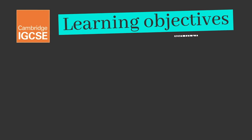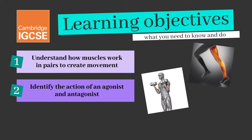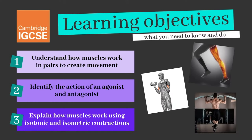Our three learning objectives today are to understand that muscles work in pairs to create movement, identify the action of an agonist and an antagonist, and to explain how muscles work using isotonic and isometric contractions. Throughout the video I'll also be providing you with practical examples so that you'll have a bank to call upon come exam time.